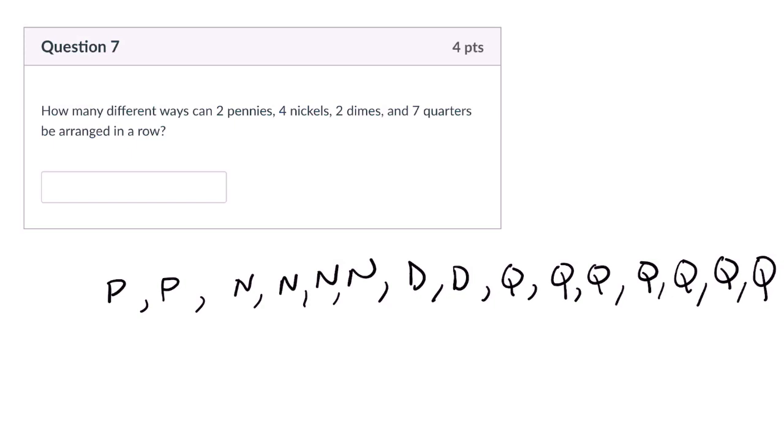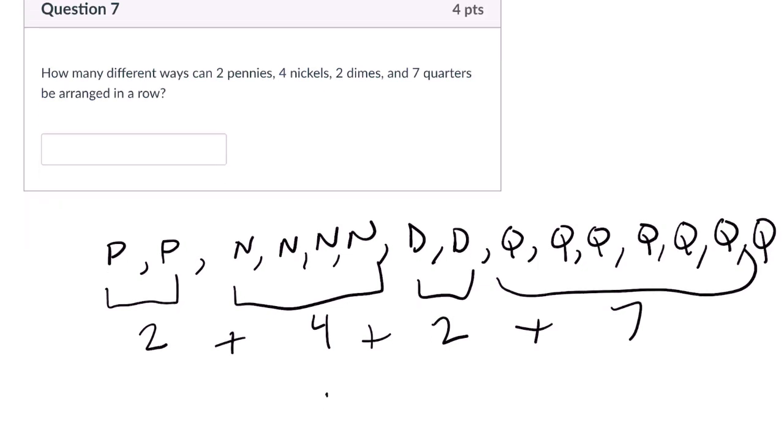How many different ways can they be arranged in a row? Well, two, four, two, and seven. Where n is all of them, that's the number of things we're arranging, and that's six plus nine, 15.